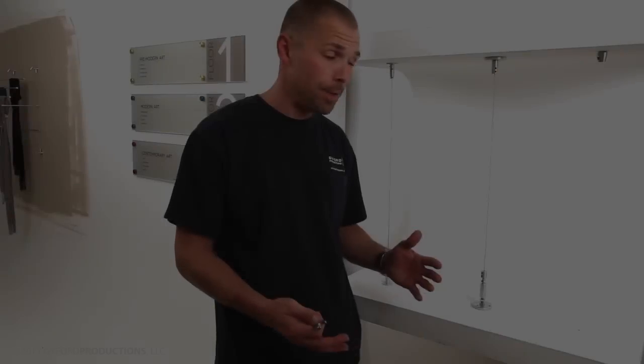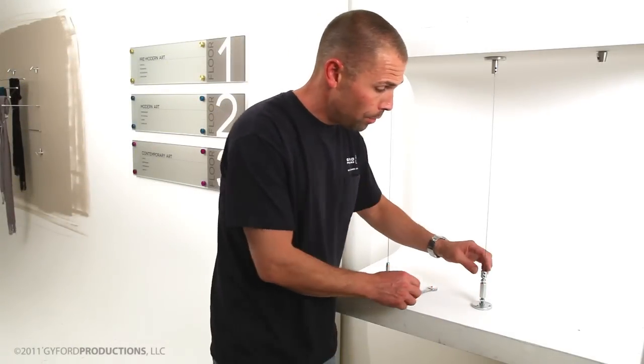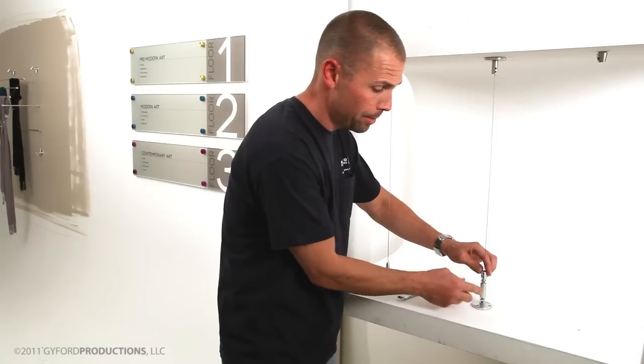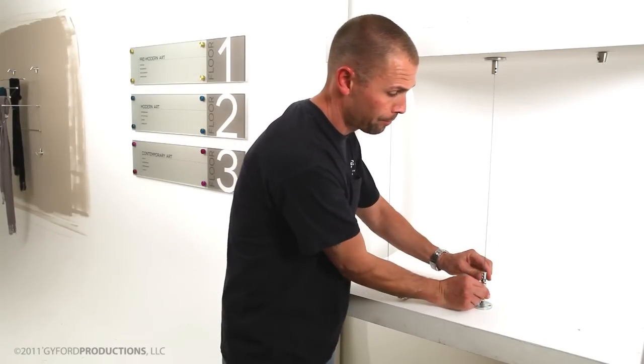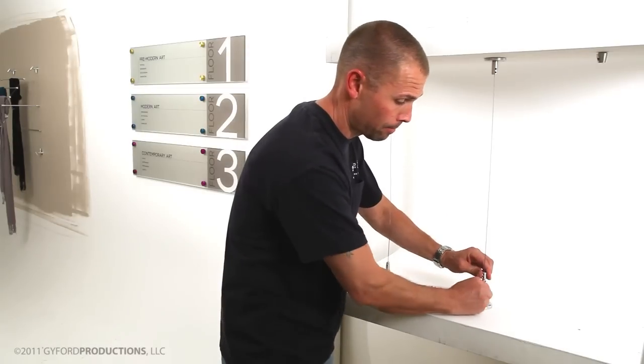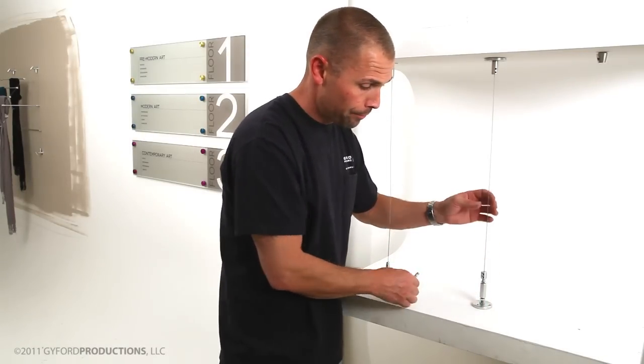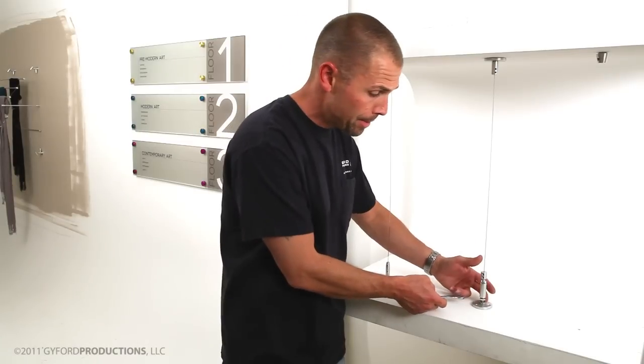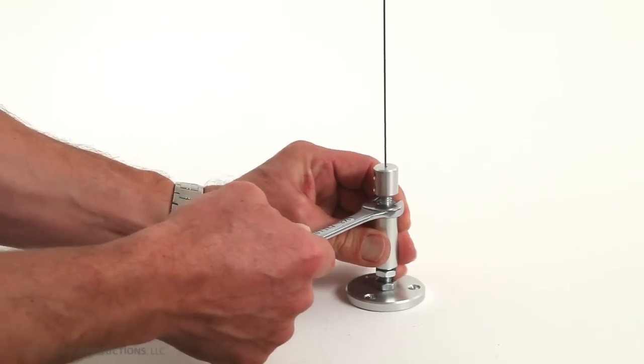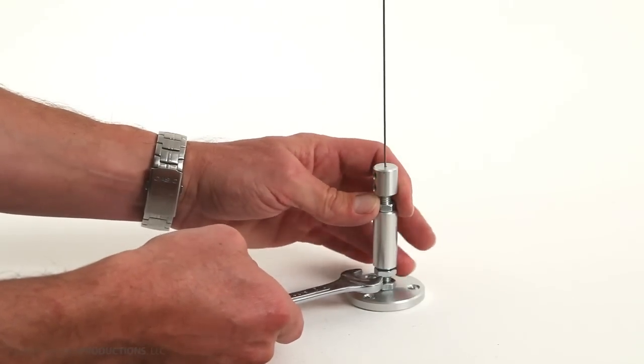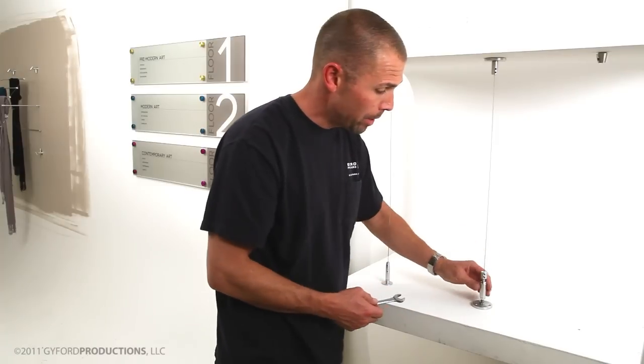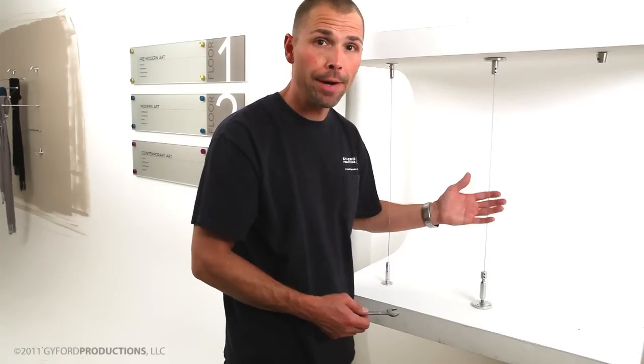All that's left to do now is tension it by turning the turnbuckle body. We'll hold the head with one hand and rotate the body. As we do this, it draws these two pieces together and tensions the wire. The very last step is to set the jam nuts that are on either side of the turnbuckle body against it. These will lock it in place and prevent it from rotating or loosening later. There we go. It's locked up tight and we've got a nice tension on the wire.